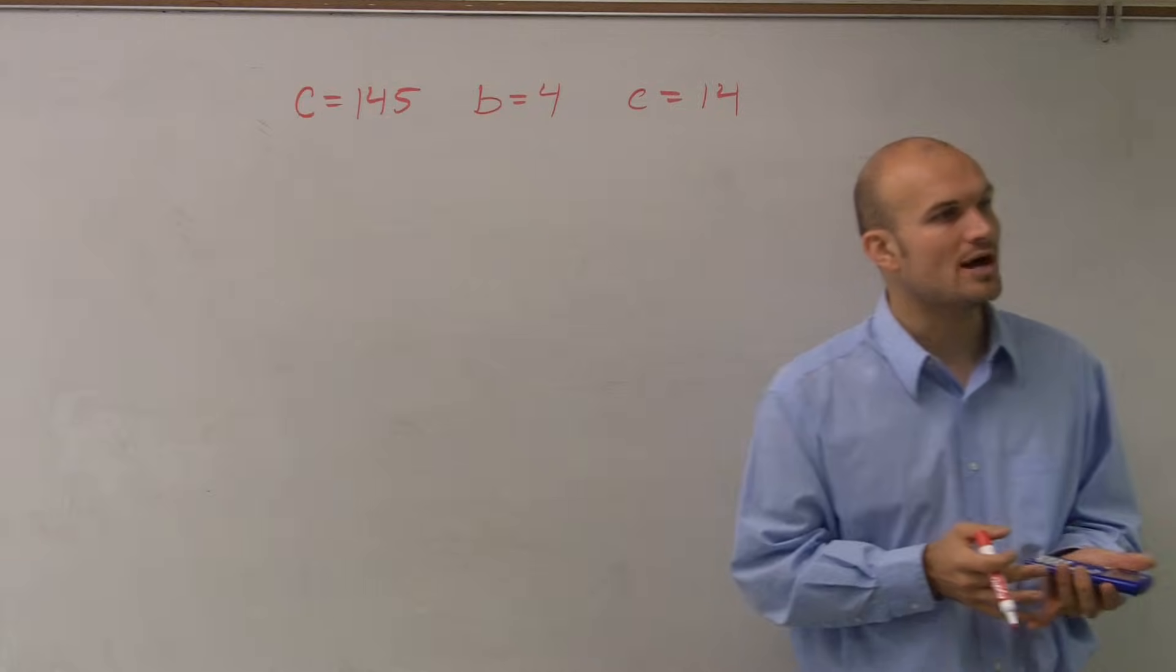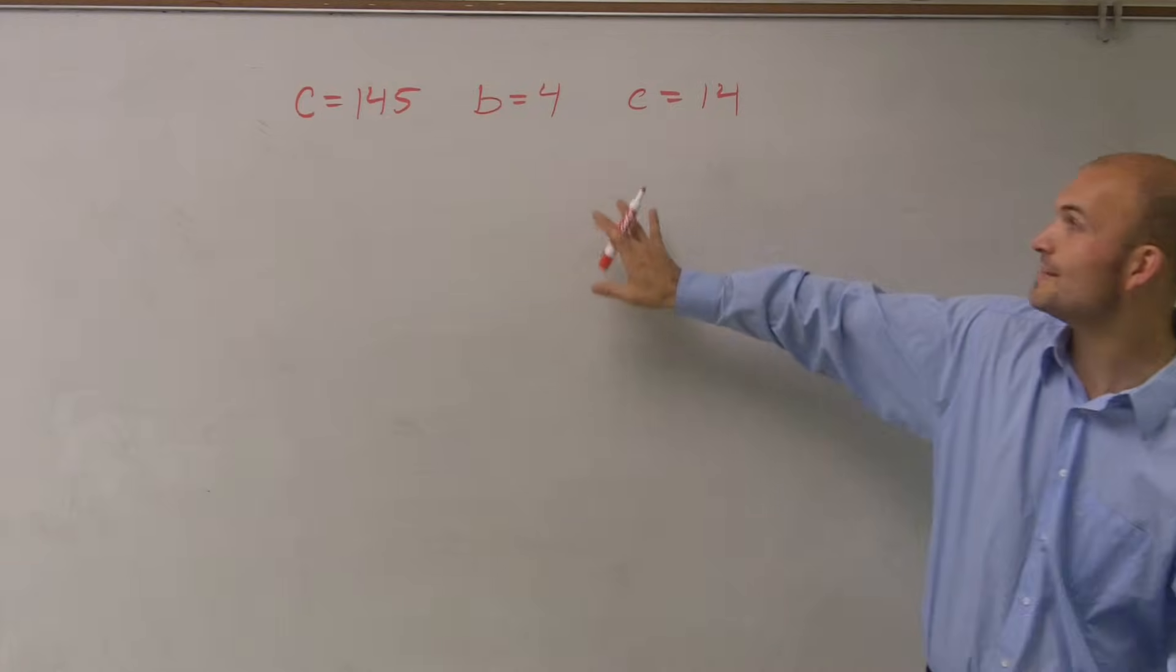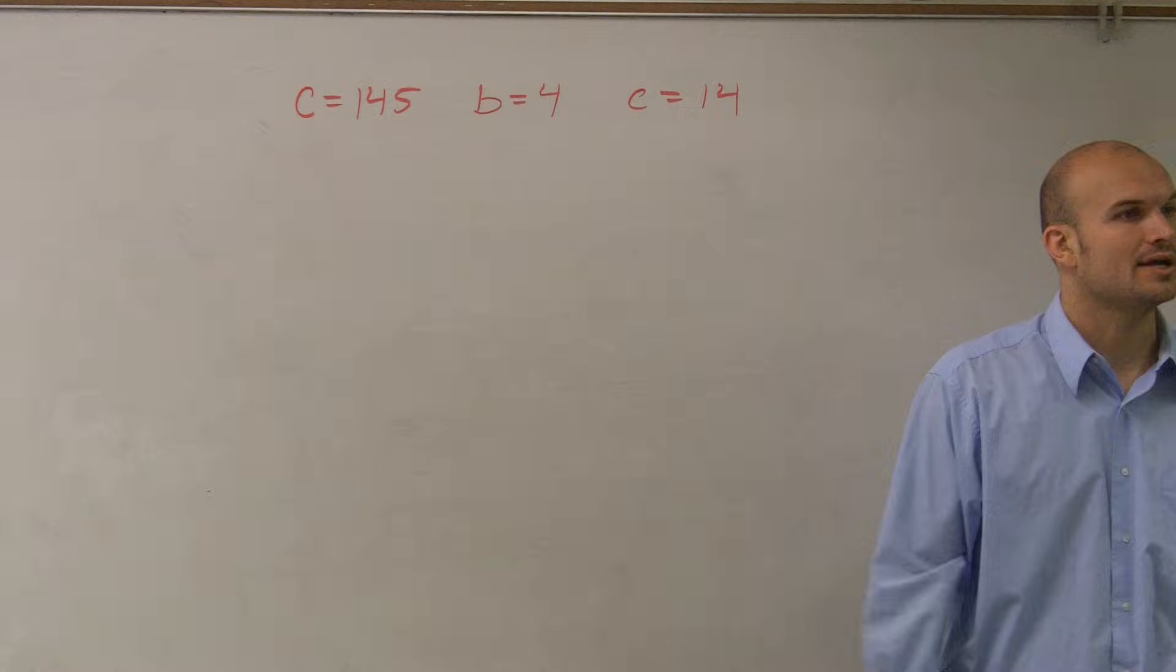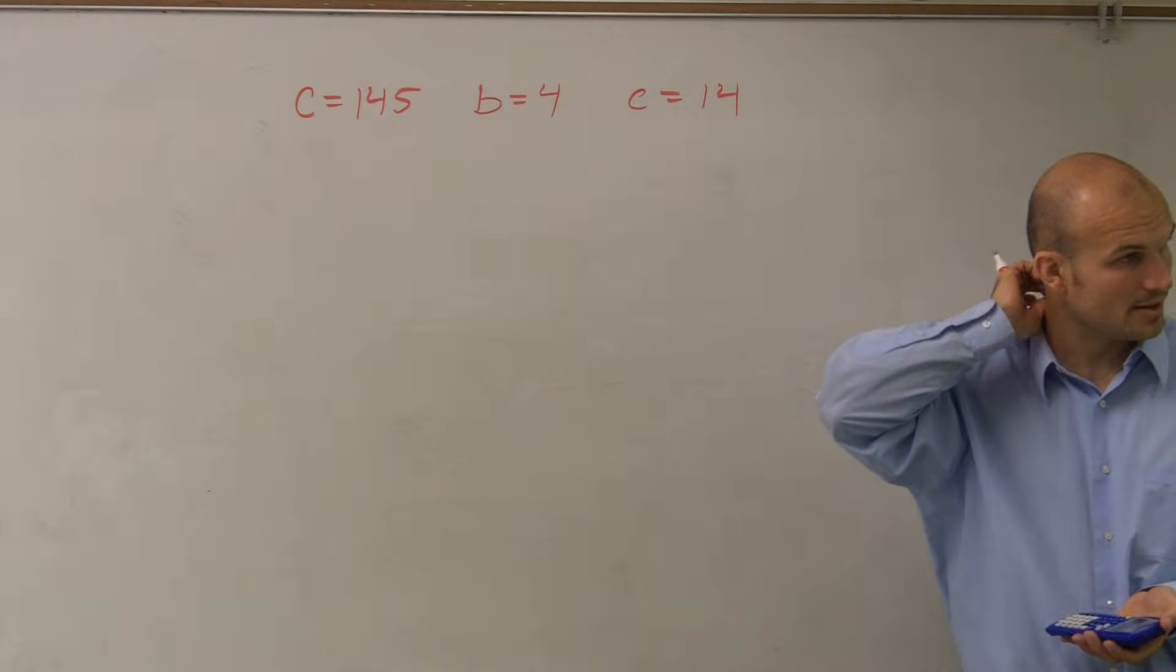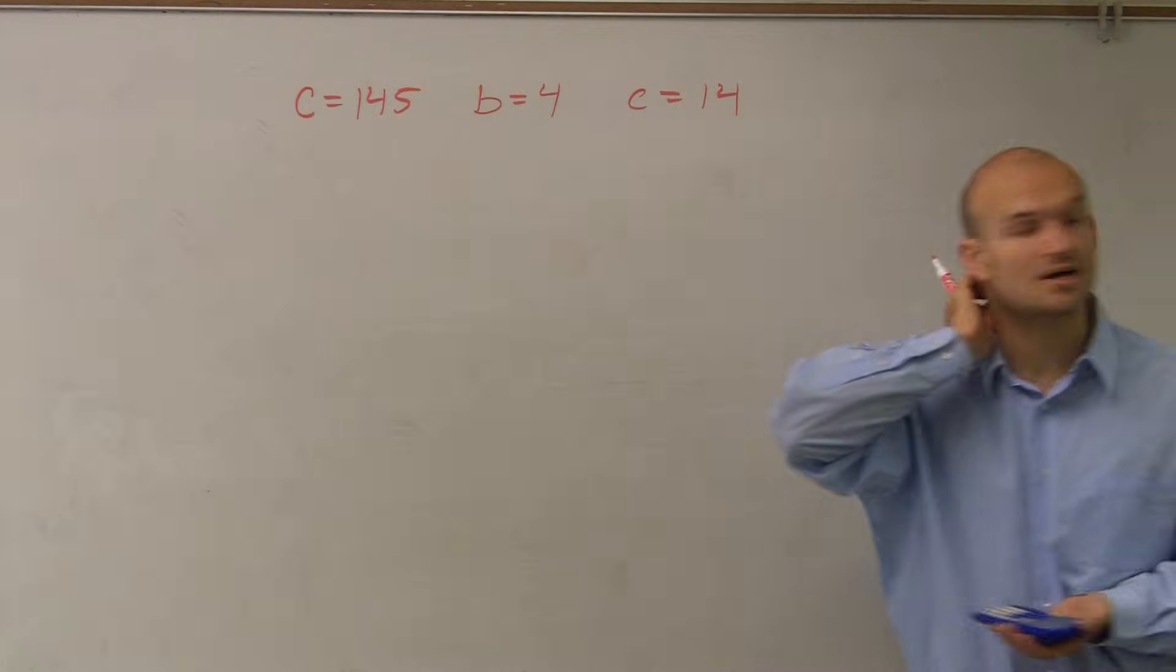So here, I'm given a triangle. Or I'm sorry, I'm not given a triangle yet. But I'm given two side lengths and an opposing angle. When I'm given two side lengths and an opposing angle, I know I can use my Law of Sines.